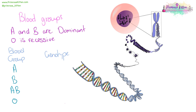If your blood group is A, you are either going to have two dominant A genes, or a dominant A gene and a recessive O gene. If your blood group is B, there's either going to be two dominant B genes, or a dominant B gene and a recessive O gene. If your blood group is AB, you'll have a dominant A gene and a dominant B gene. If your blood group is O, you'll have two recessive O genes. There are also positives and negatives. People with A blood group can receive from A or O; B from B or O; AB from A, B, AB, or O donors; and O can receive only from O.